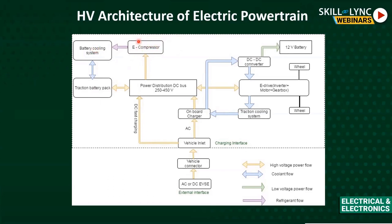For AC or DC charging, the traction battery needs to be charged just like fueling an ICE engine. There is a vehicle connector — like a fuel flap — connecting AC power to the vehicle inlet. The onboard charger converts AC power from the grid to DC power to charge the traction battery. This is the basic high-voltage architecture of the electric powertrain.